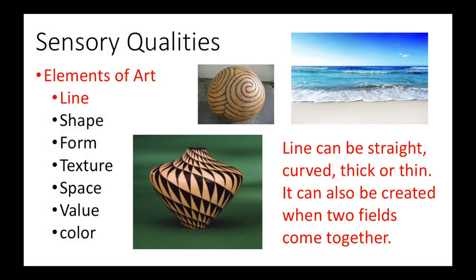We begin with sensory qualities. They are line, shape, form, texture, space, value, and color. A line can be straight or curved, thick or thin. It can also be created when two fields come together. For example, in a picture of the ocean, a line is created where the sky meets the water — this is called the horizon line. A wavy line is created where the water meets the sand, and a line that follows the outside of an object is called an outline.